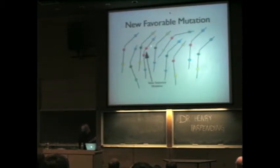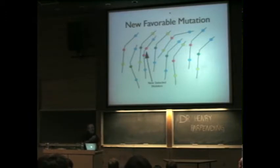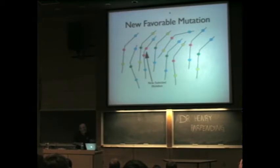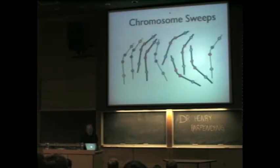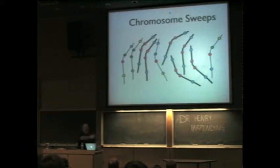Now, here's a new mutation, and it's favorable. It makes its bearer better — it has increased fitness. If it's a lucky gene, the person carrying it has 20% more children than others do. When you start iterating that 20% over time, pretty soon there's a whole lot of copies of this new version. It's swept — it's gotten to very high frequency very rapidly. And it has gotten there so fast that the shuffling that happens in crossing over hasn't had time to break up the chromosome.